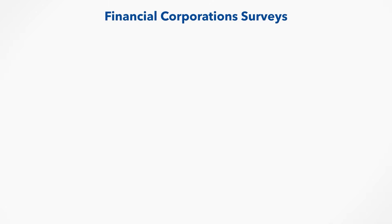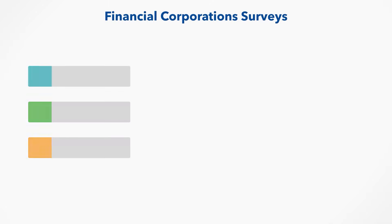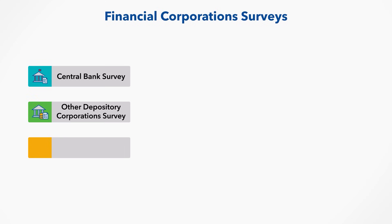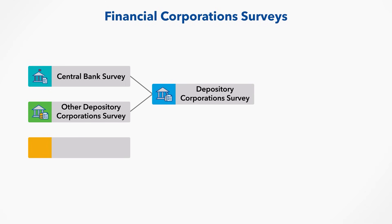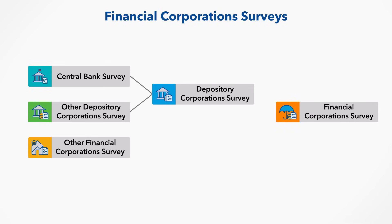Five analytical surveys are compiled based on sectoral balance sheet data of the three financial corporations subsectors. The Central Bank survey is generated from the sectoral balance sheet of the Central Bank. The other depository corporations survey is generated from the sectoral balance sheet of the other depository corporations. The depository corporations survey is derived by consolidating the Central Bank survey and other depository corporations survey. The analytical presentation of the other financial corporations survey is generated from the sectoral balance sheet of the other financial corporations. And finally, the financial corporation survey is derived by consolidating the depository corporation survey and other financial corporations survey.